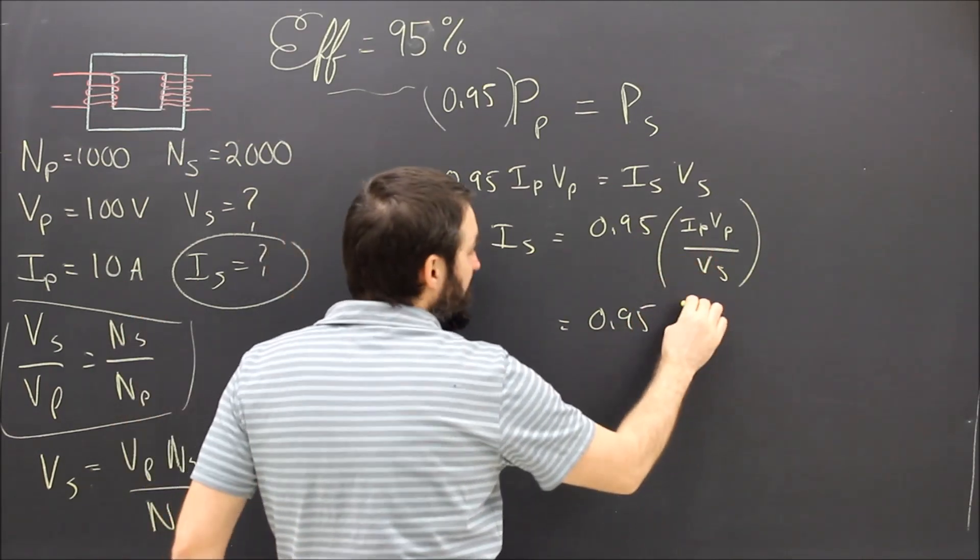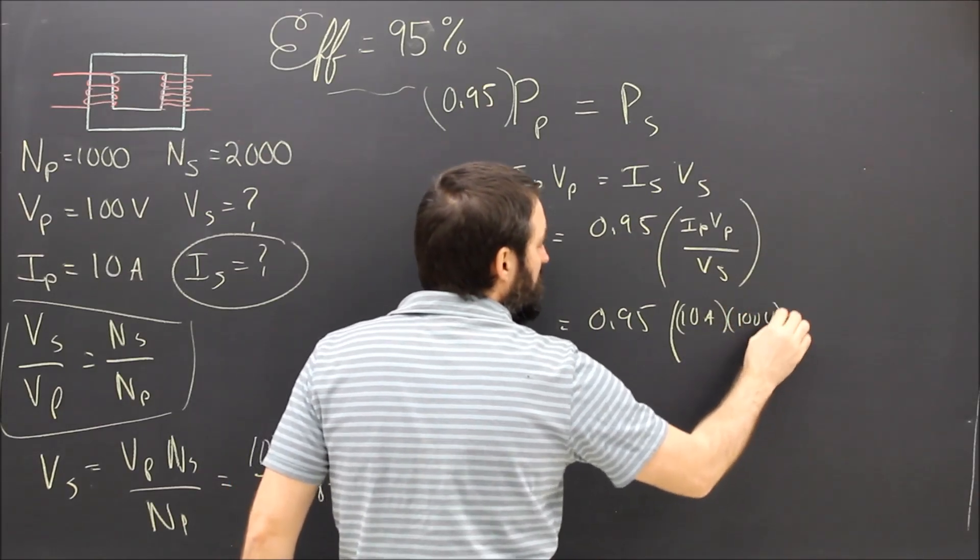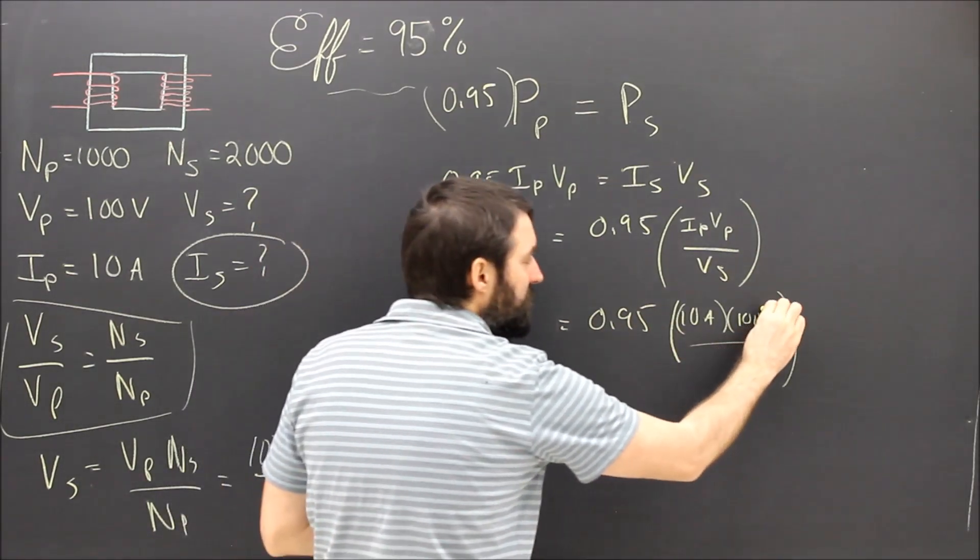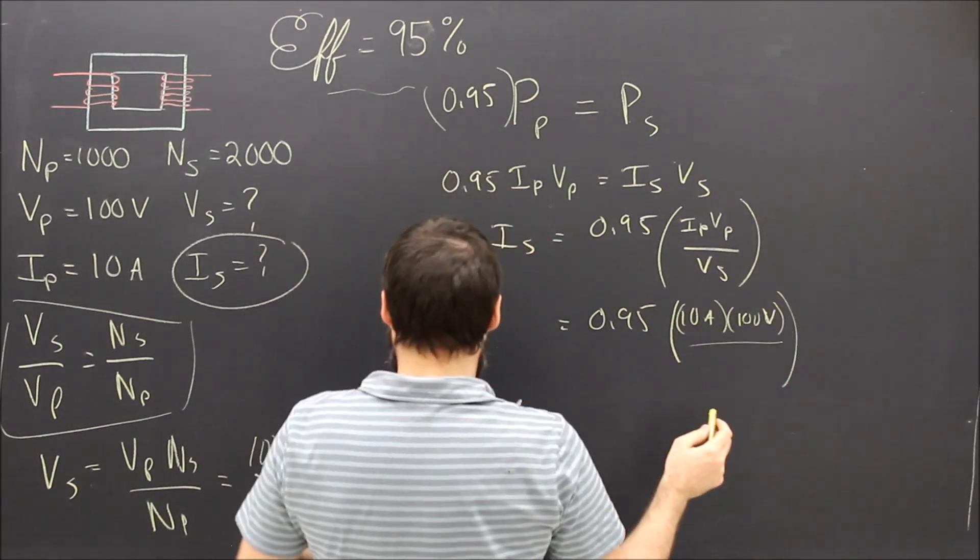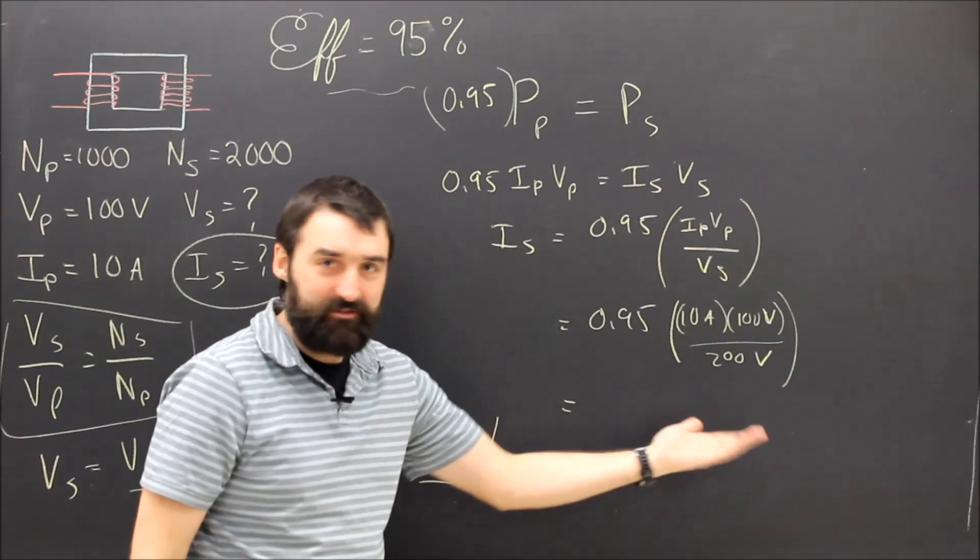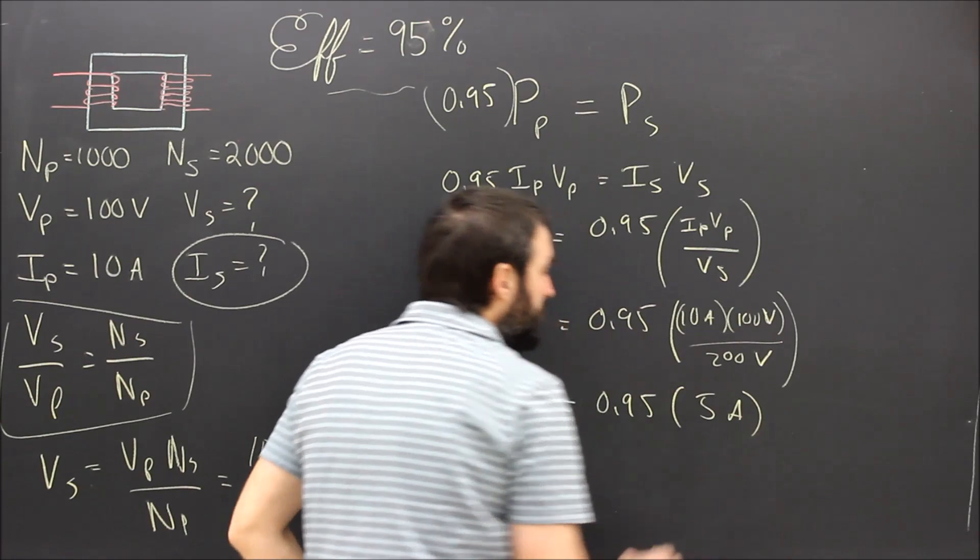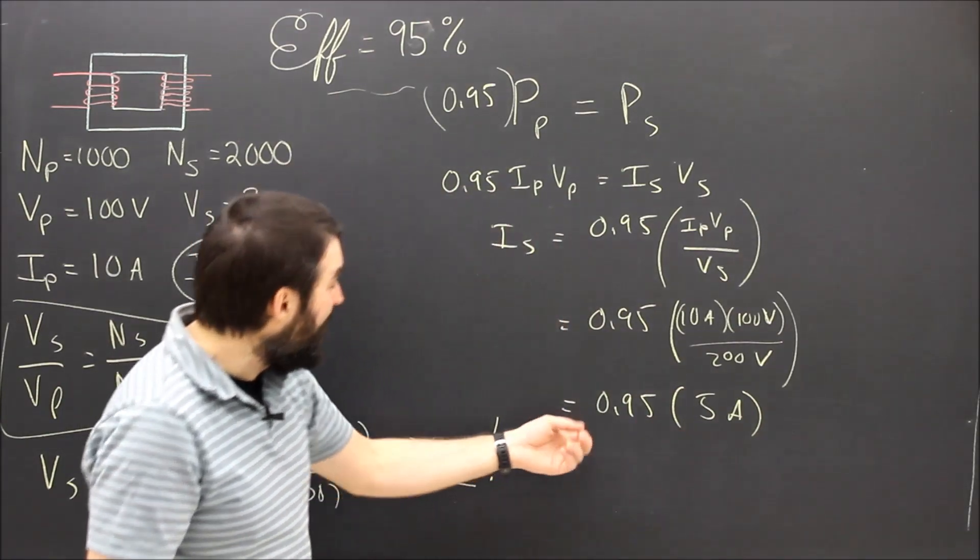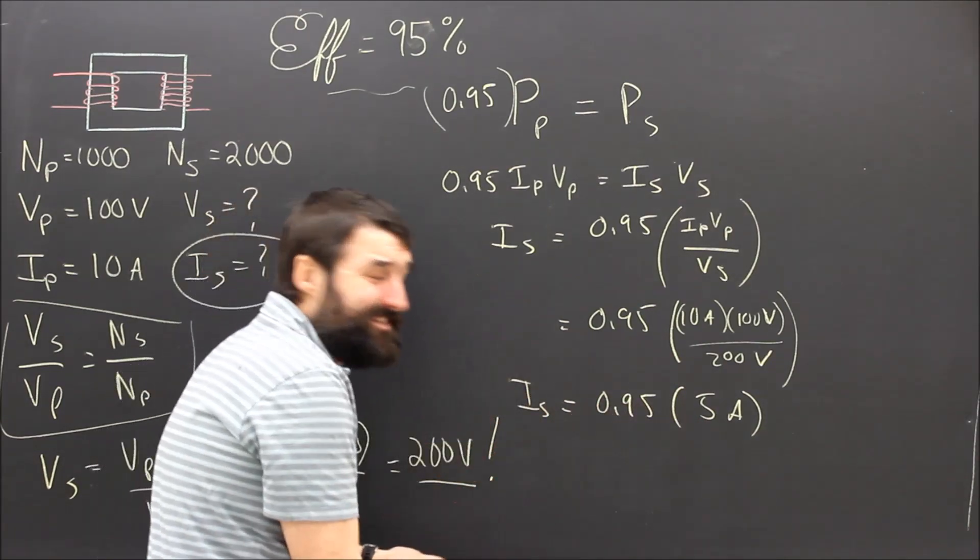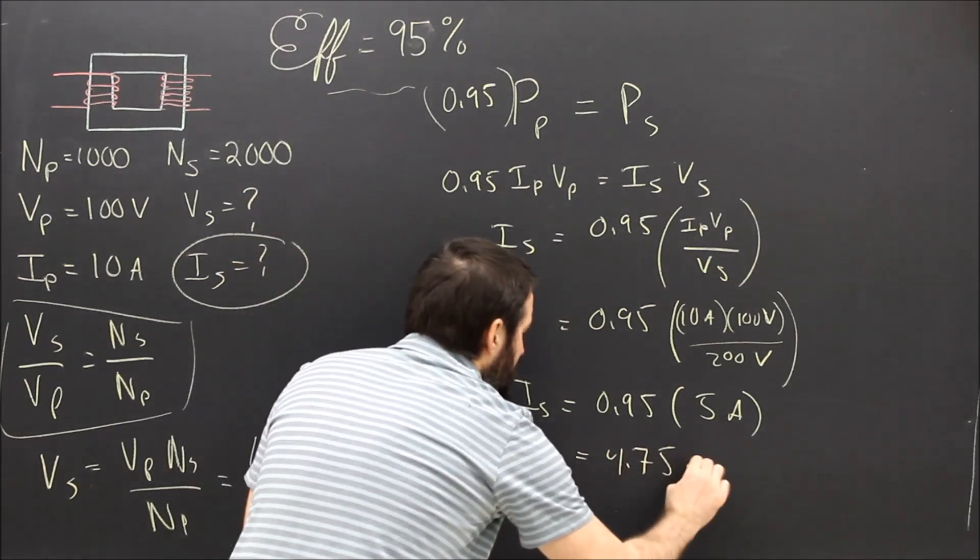Subbing that in, I can see that IP is 10 amps times 100 volts. I could have done that in my head, right? That's 1,000 watts divided by 200 volts, which was our answer from before. And I can see that that's 1,000 divided by 200. That's 5 amps. That's the answer that I would have had if it had been 100% efficient. And it turns out that all I have to do is multiply the current that I would have had by the efficiency. So maybe that's an easier way to do it. What's 95% of 5 amps? It's 4.75 amps.